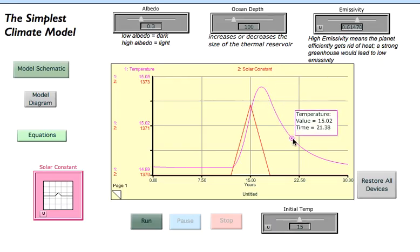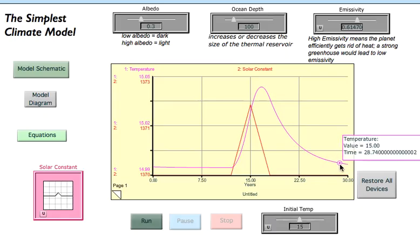And then it drops back down. It doesn't quite get back down to 15 after we have restored the solar constant to 1370 because the system takes a while to sort of settle down again. And that's a function of the kind of thermal mass of the climate system, which is related to the ocean temperature.